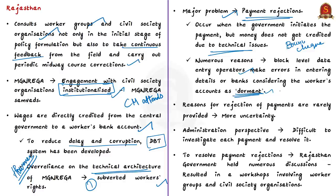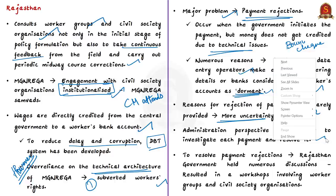Another problem is when the software they use does not work properly — for example, when there is a problem with Aadhaar linkage or with the National Payment Corporation of India. Sometimes when these payments are rejected, reasons are not even given, leading to more uncertainty. From the administration perspective, it becomes very difficult to investigate each payment, understand the reasons for rejection, and resolve it.